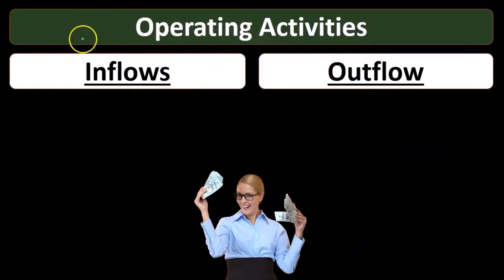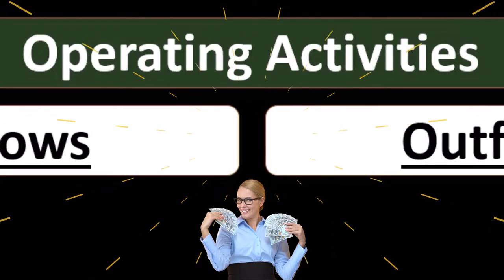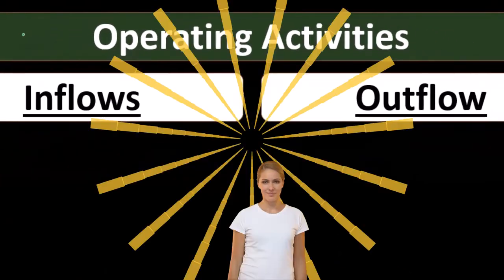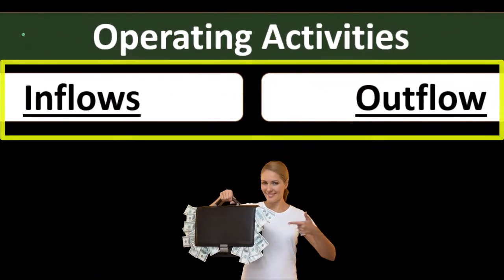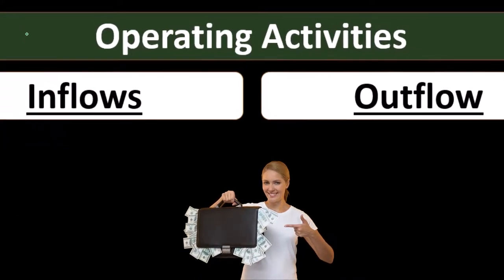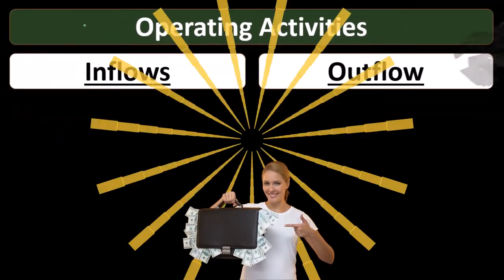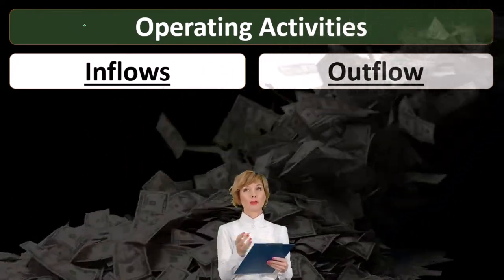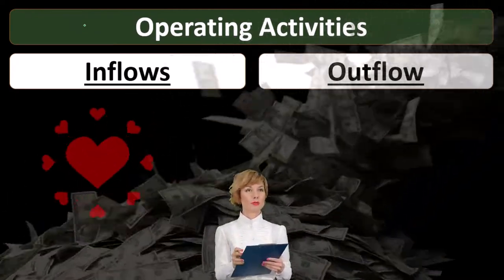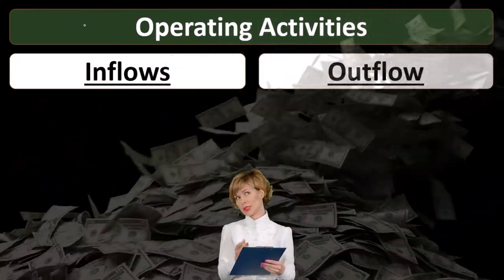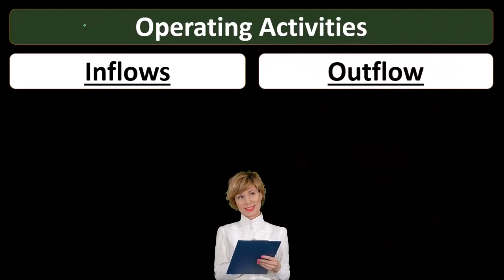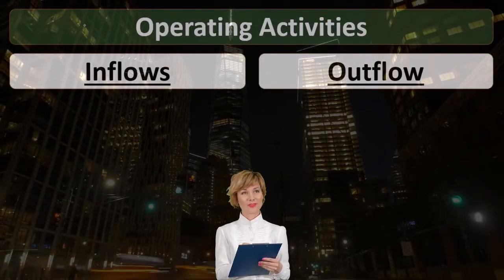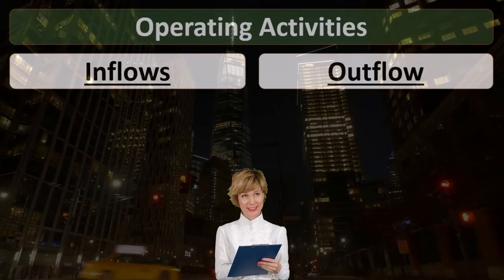We'll start off with the operating activities, looking at the major components of cash flows within operating activities — inflows and outflows. Remember, what we're talking about here is cash. When we're talking about the statement of cash flows, we're talking about the cash that goes into the company and the cash that goes out of the company, related to operating activities.